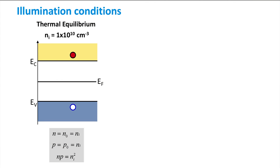Here we have our familiar band diagram of an intrinsic semiconductor. The Fermi level is located close to the middle of the band gap, between the conduction and the valence band edges. The Fermi level energy represents the average energy of the valence electrons in the material. The carrier densities are equal to Ni, and the mass action law applies, meaning the product of N and P is equal to Ni squared. The average energy level of electrons and holes both sit at Ef.